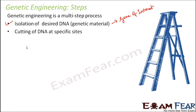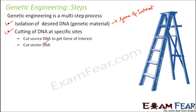The DNA is cut at specific sites with the help of restriction enzymes. This cutting happens not only at the source DNA but also at the vector DNA, because both need to be cut using the same restriction enzyme. Once the cutting is done, formation of recombinant DNA takes place — the cut vector DNA and the cut source DNA combine together to form the recombinant DNA.